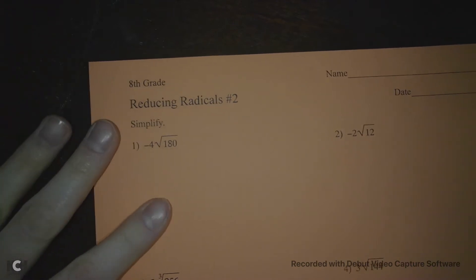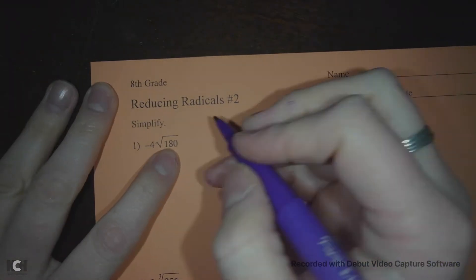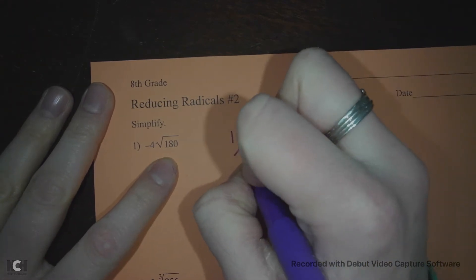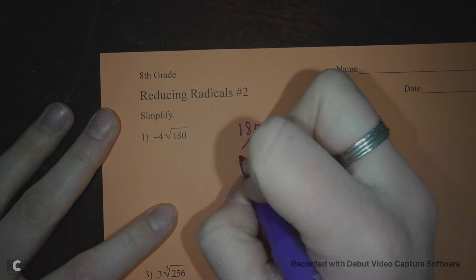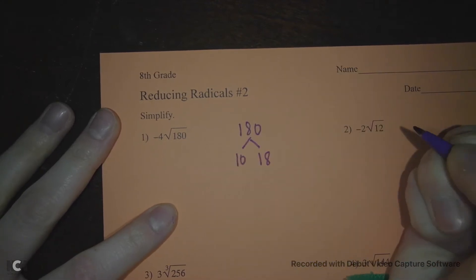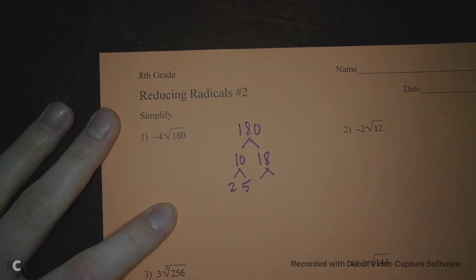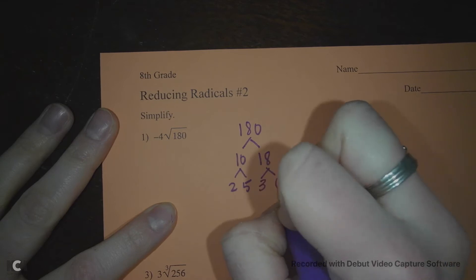So we're gonna start off like what we did yesterday. We're gonna take our 180, see how it's not a perfect square, and we're going to write him out and factor tree our 180. So 180 is 10 and 18, and then 10 is 2 and 5, and 18 we have a few different options for that one, so let's do 3 and 6, and 6 is 2 and 3.